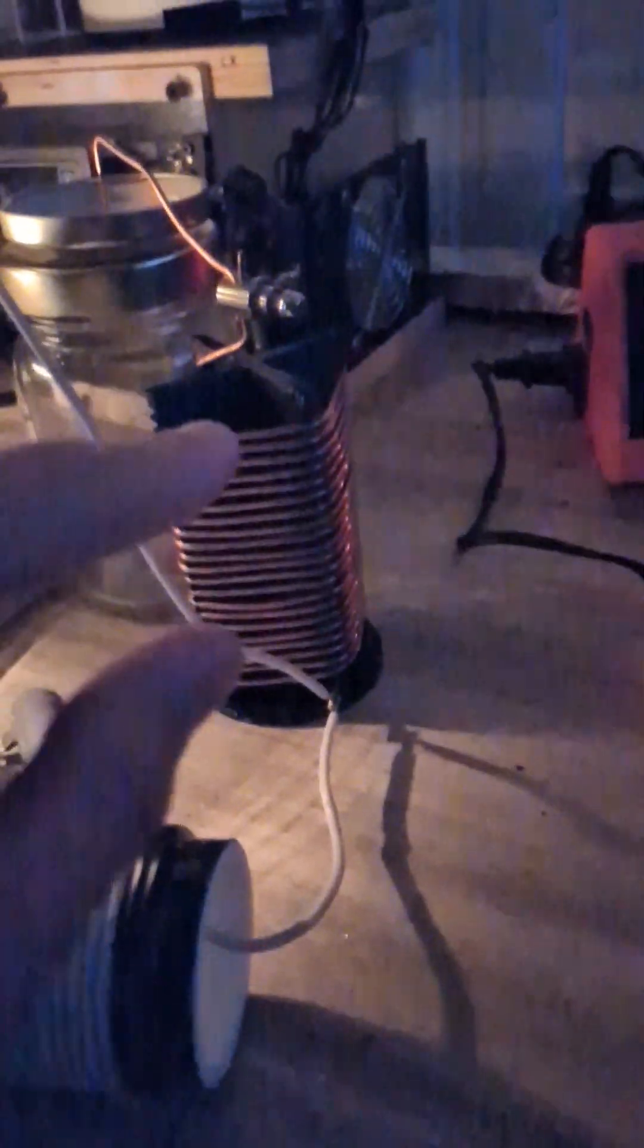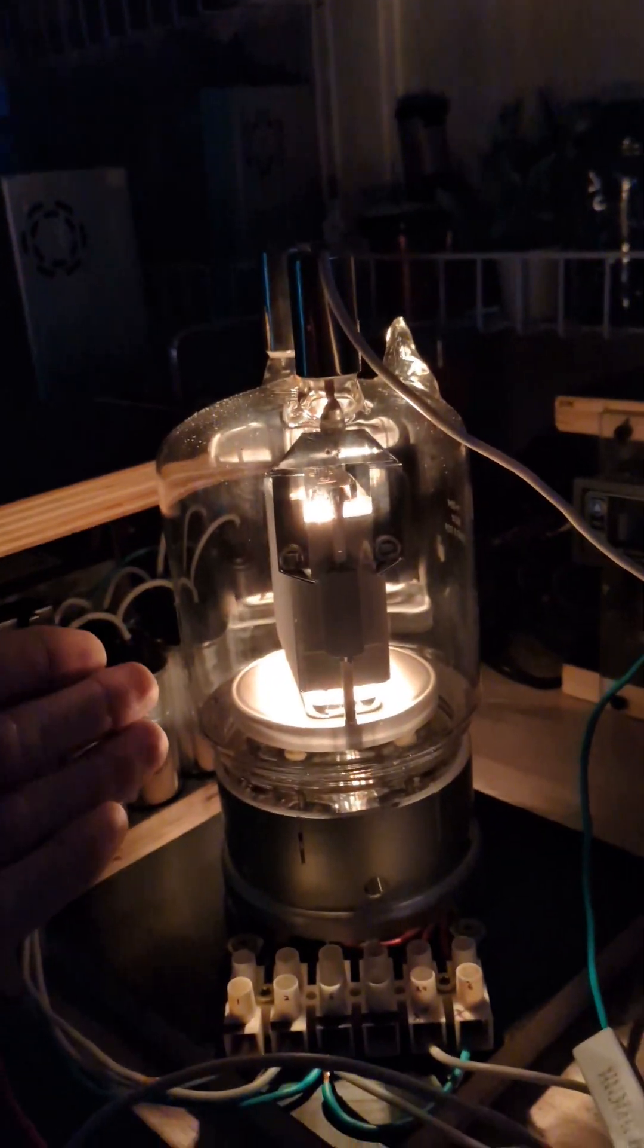It has 30 turns on a 1.9-inch diameter PVC pipe. The bottom end of this inductor is connected to the bottom end of the resonator, and this is also connected to the anode of the GU81M tube.